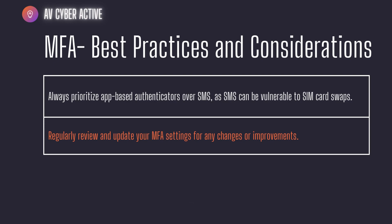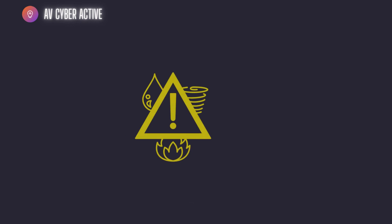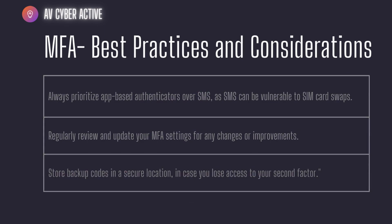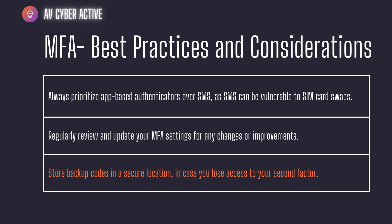Second consideration: regularly review and update your MFA settings for any changes in the environment or improvements. Disaster can hit your organization or personal setup at any point in time, so always regularly review and update your MFA settings according to a changing environment. The last consideration — one of my favorites — is to store backup codes in a secure location in case you lose access to your second factor authentication. In MFA, if your software fails or settings are lost across an organization, a backup code is needed to unlock all features. It is of utmost importance to store those backup codes in a secure, possibly geographically diversified location.